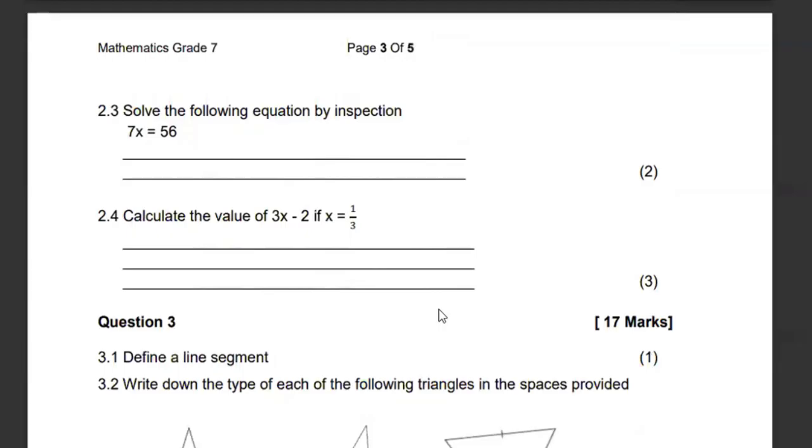Then they want us to solve by inspection. In our small grades, we used to have seven times a box must give us 56. So which number do we multiply by seven to give us 56? The number needs to be eight. So that is by inspection. You can try by checking. If you get 56 divided by seven, you shall end up with eight. Any number that is next to a letter simply means multiplication.